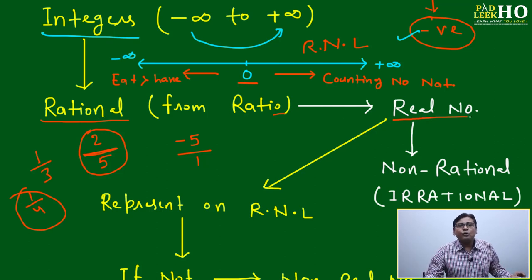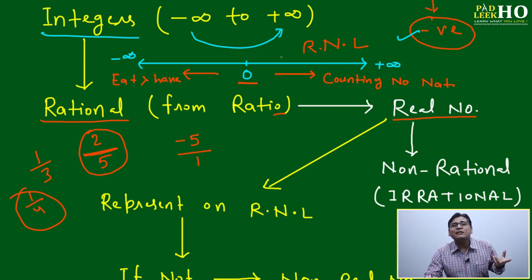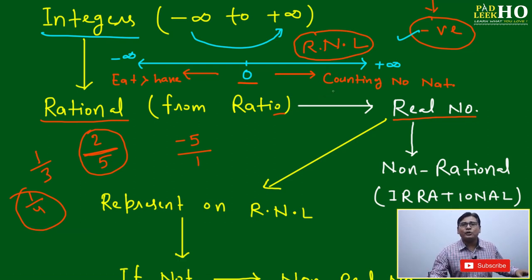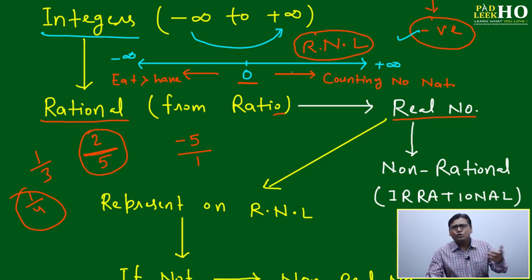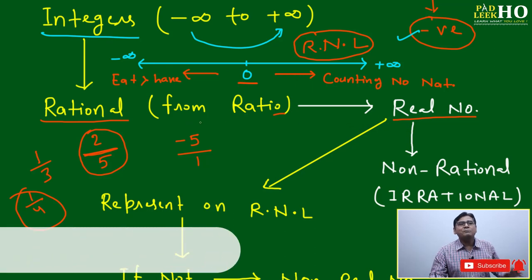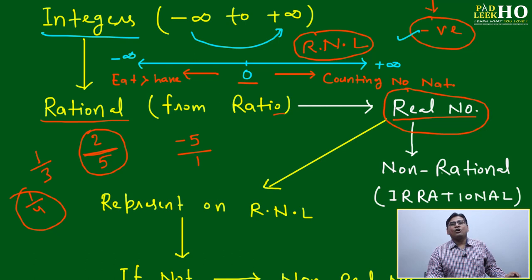Rational number falls under a broader category called real number. This real number line is one of the most important tools — it is like a stick, and it is my best friend. If you are preparing for CAT or trying to understand math, this real number line will be your best friend too. Anytime you are not able to understand a question, you can use this real number line. Not only for numbers but for geometry as well — anywhere, it is your best friend for CAT preparation.